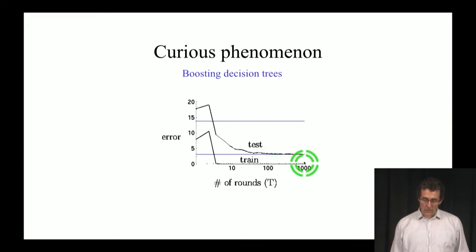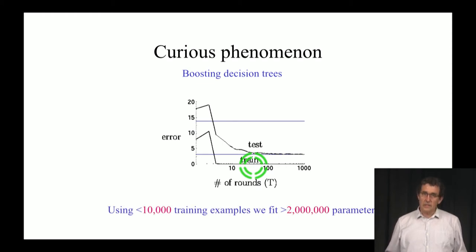This is very different from what we expect usually from doing machine learning with models that have more and more parameters. What we expect is that after we reach training error zero, then the test error will start to increase because we're overfitting. But here, to the contrary, boosting continues to improve the test error after the training error is already zero.